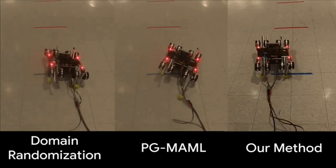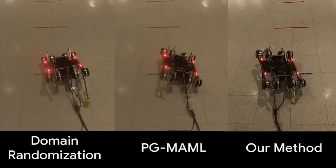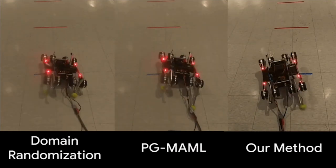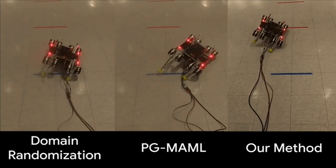In this video, we display the trajectories between domain randomization, PG-MAML, and our method. This clearly shows that batch-hill climbing produces a much farther walking trajectory than the other methods.